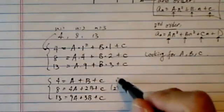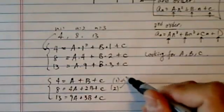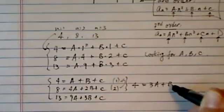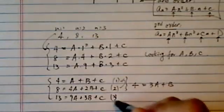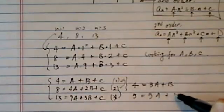Subtracting equation 2 and 1 together, I have an equation I can reduce it down to 4 is equal to 3a plus b. Subtracting 3 and 2 together, I'll have 5 is equal to 5a plus b.